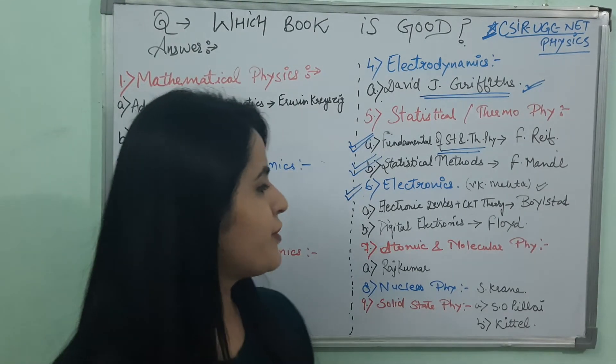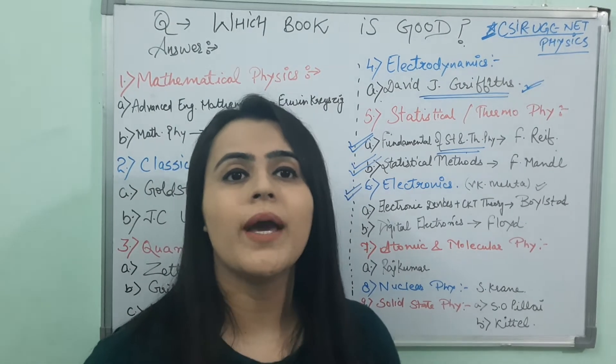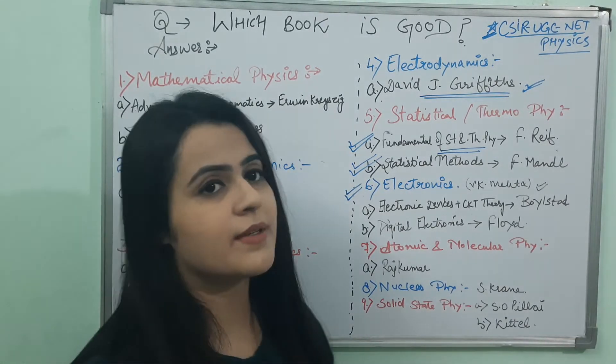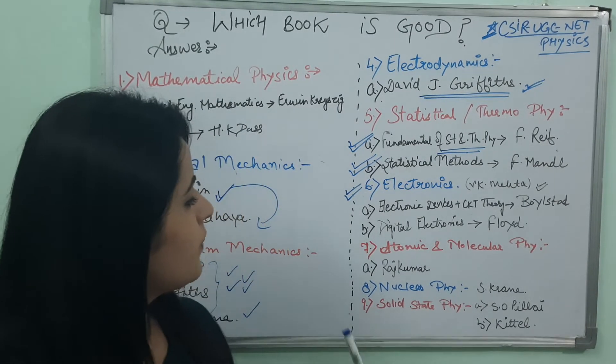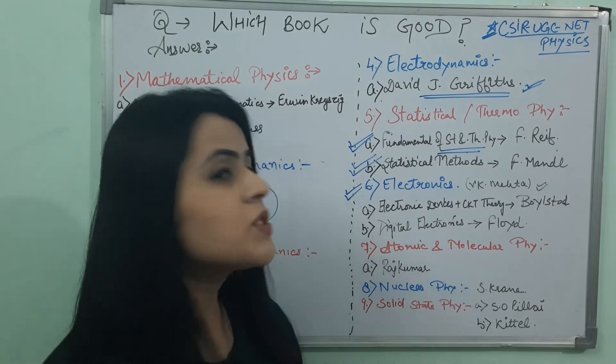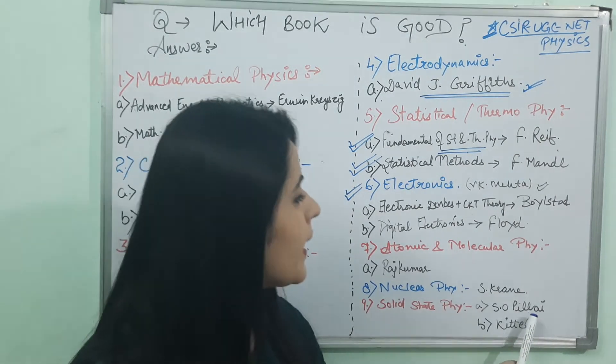And then the eighth book is Nuclear Physics. Obviously Krane. Krane is very important and very good book for nuclear and particle physics. And the last important is Solid State Physics. For Solid State Physics, I refer you Pillai and Kittel.